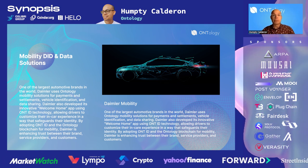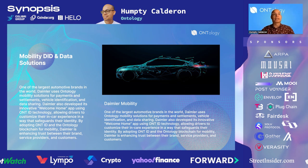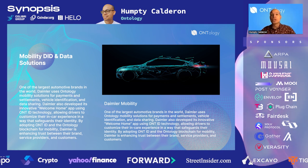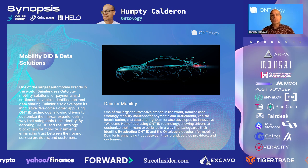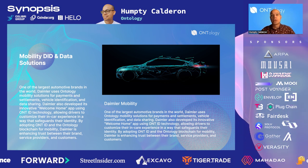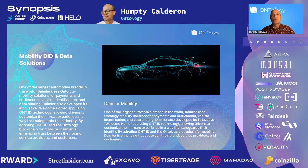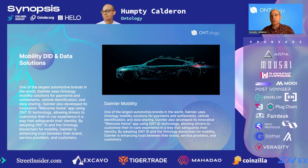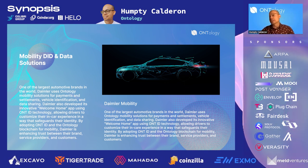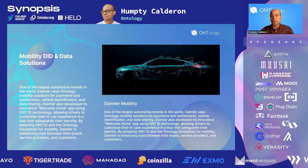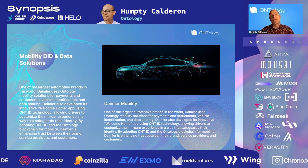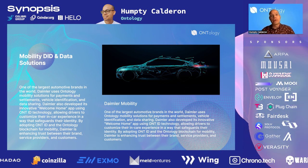Another example is Daimler Mobility — you may be more familiar with that name from their vehicles, Mercedes-Benz. They work with Ontology to build a welcome home app, which uses OntID to allow drivers to curate their in-car experiences in a way that safeguards their identity. You can think of this as a personalized experience: when you start the car, it signs you into your OntID, then customizes seat position, radio stations, potentially even integrating with shopping. By integrating with OntID and the Ontology blockchain for mobility, Daimler is enhancing that trust between their brand, service providers, and customers.